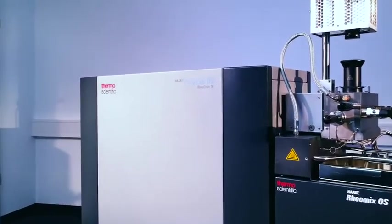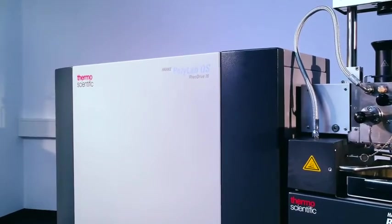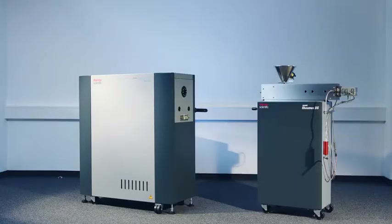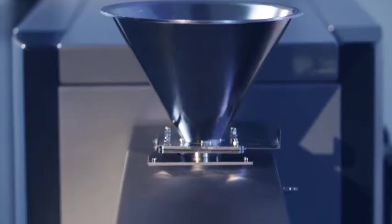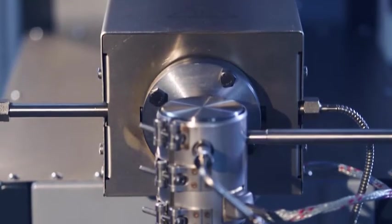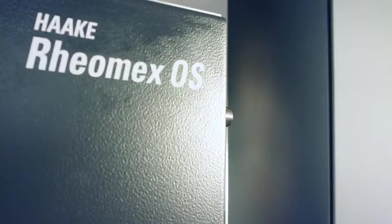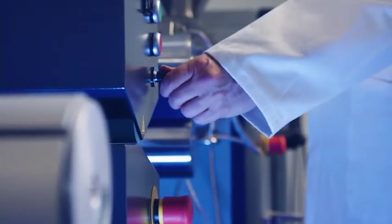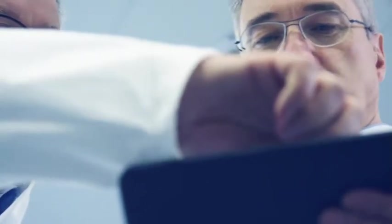The solution is the ThermoScientific HAAKE PolyLab system. It's the modular instrument of choice for new material development and production as well as quality assurance in the manufacturing site. The PolyLab Torque Rheometer System offers four applications in just one instrument, controlled by a common software platform. It helps save lab space and capital costs, and it reduces operator errors. The PolyLab system makes new material development more efficient.